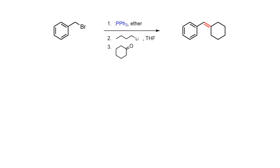The Wittig reaction is a very powerful way of making carbon-carbon double bonds. An alkyl halide is converted to a phosphonium ylid in two steps, and a nucleophilic ylid is coupled with an aldehyde or a ketone to give an alkene.